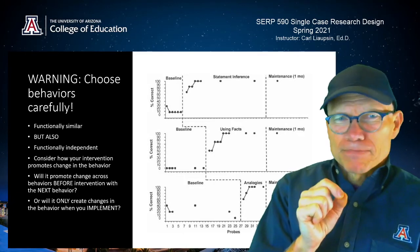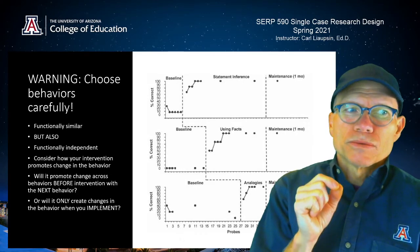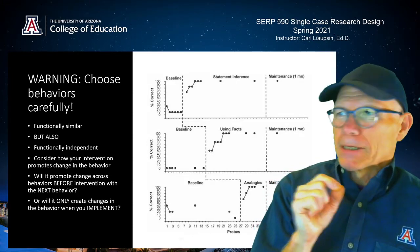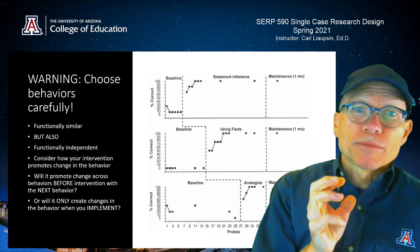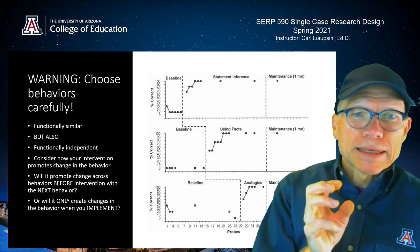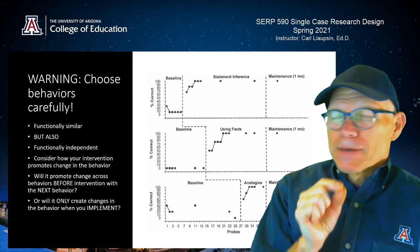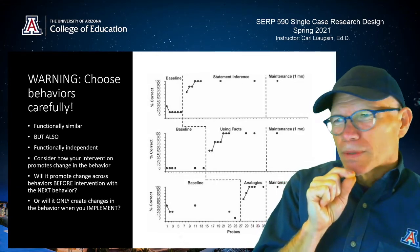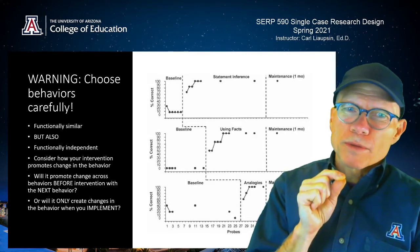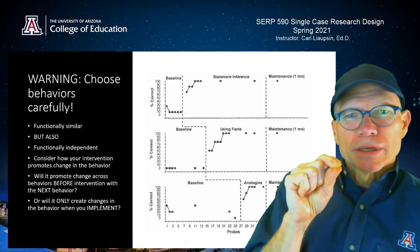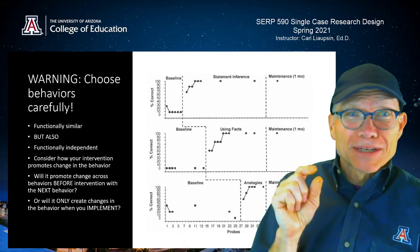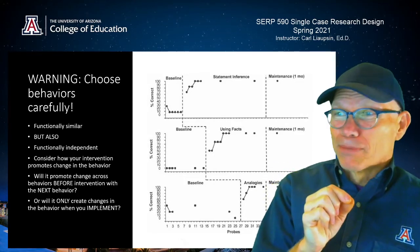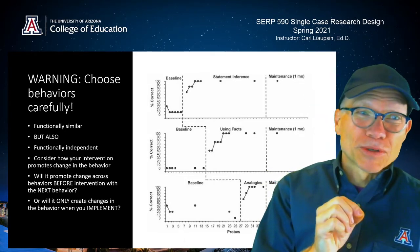The big thing to be careful about is that your behaviors have to be functionally similar but also functionally independent. Functionally similar means — like in this case — they're looking at three behaviors that are part of comprehension, not walking, using a spoon, and reading. But they also have to be functionally independent. You don't want to pick three behaviors where, when you implement on the first one, the student generalizes the new skill across all the others. Great for them — but it ruins your study, because it doesn't allow you to show experimental control separately.